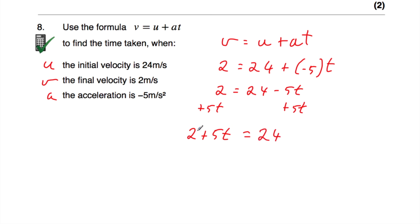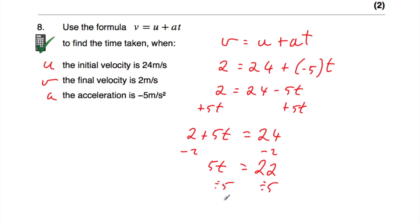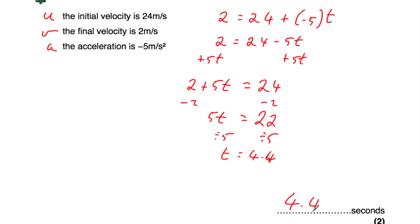Now let's get rid of this 2 — take away 2 from both sides. On the left-hand side we'll just be left with 5t, and on the right-hand side we've got 24 take away 2, which is 22. So 5t equals 22. Divide by 5 on both sides, and 22 divided by 5 is equal to 4.4. So the time taken is 4.4 seconds.